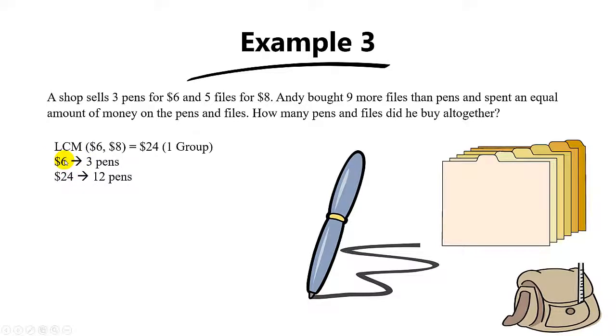You know why, right? Because when you multiply here by 4, here also must times 4. We'll do the same thing for the files. Since $8 can buy 5 files, so $24 will be able to buy 15 files.